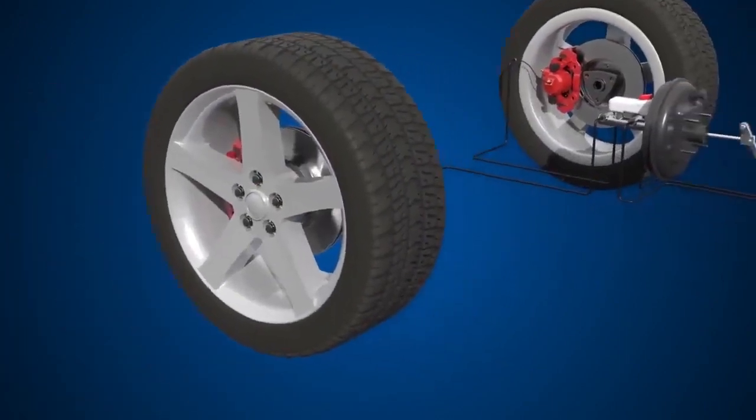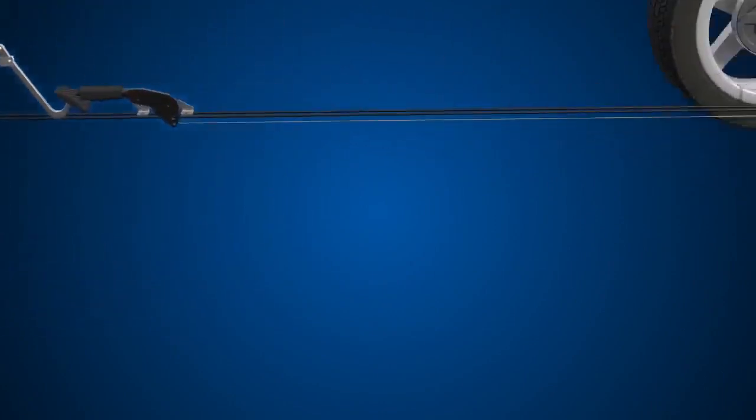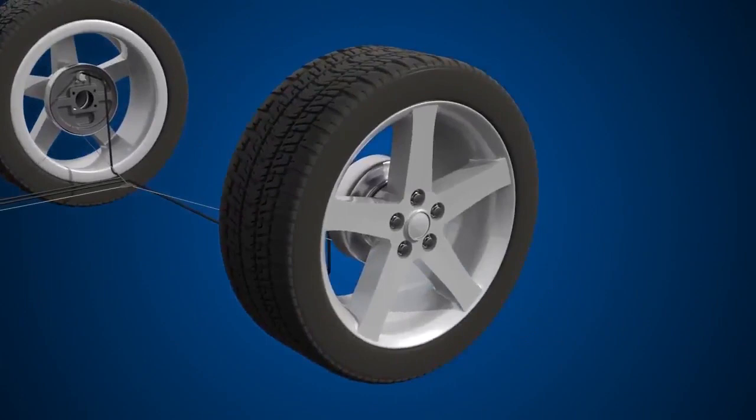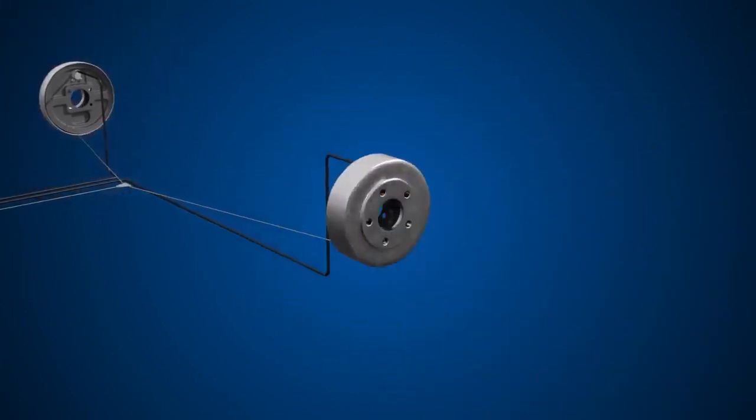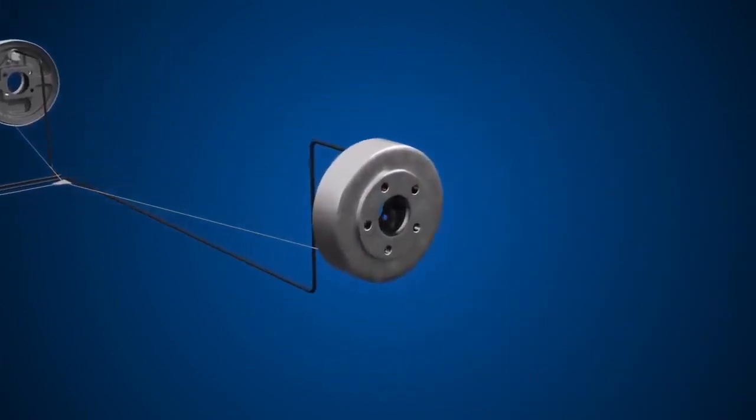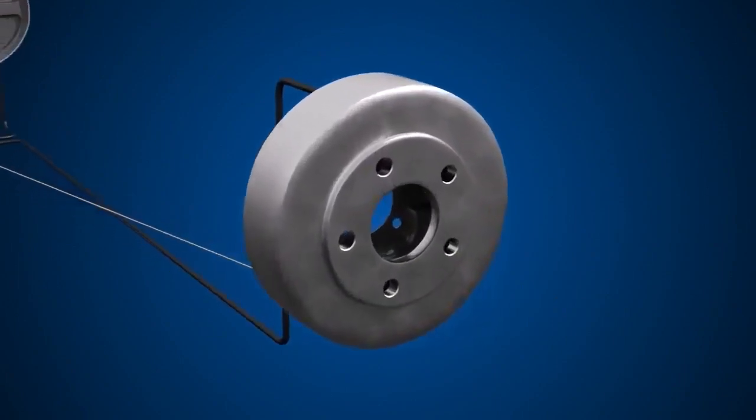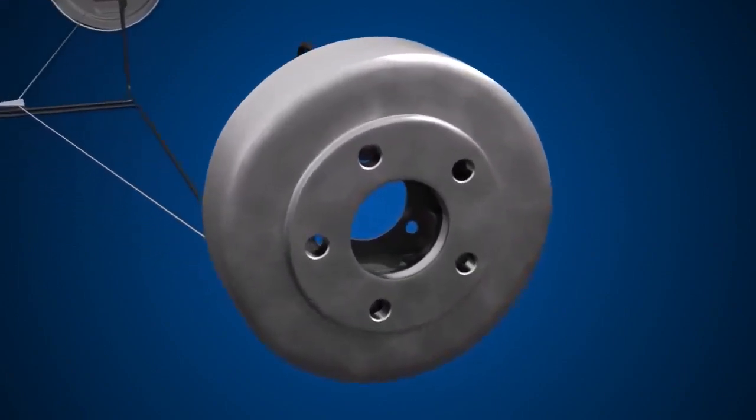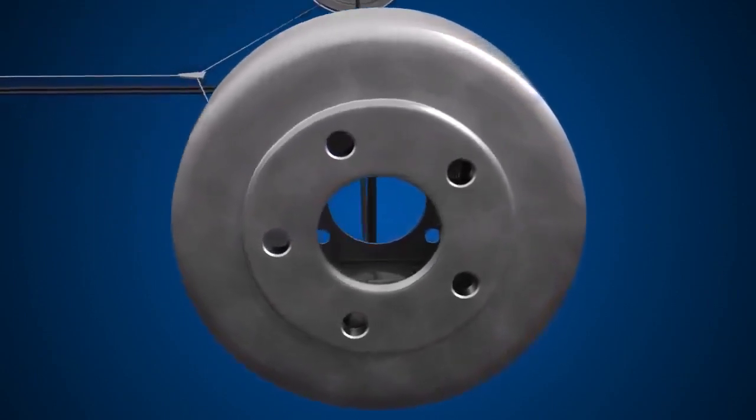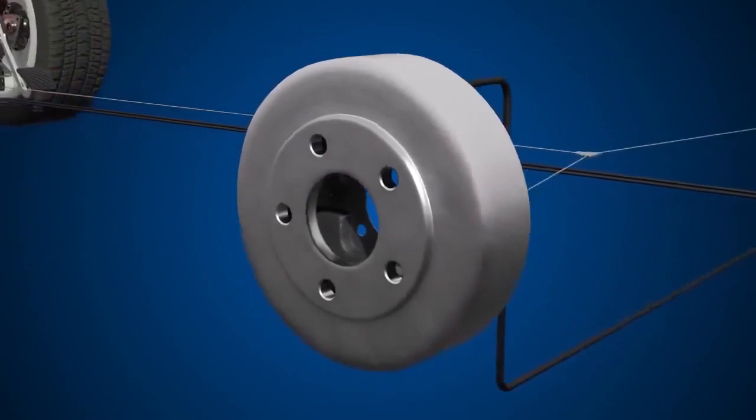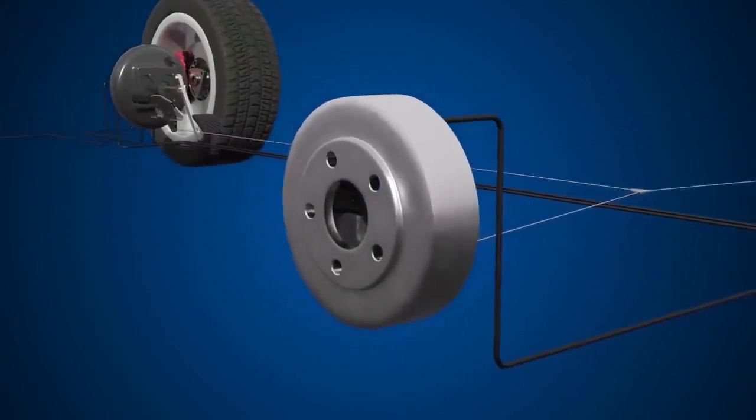Some vehicles have disc brakes on both the front and rear wheels. But in our example, we have drum brakes. Drum brakes contain brake shoes. Friction is achieved by pushing these shoes against the surface of a rotating drum. Again, the friction generated converts kinetic energy into heat, slowing the wheel.